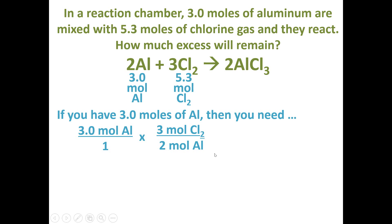When I type this in a calculator, I type out 3 times 3 divided by 2 to get 4.5 moles of chlorine. What this number represents is, if I had 3 moles of aluminum, then I would need 4.5 moles of chlorine.